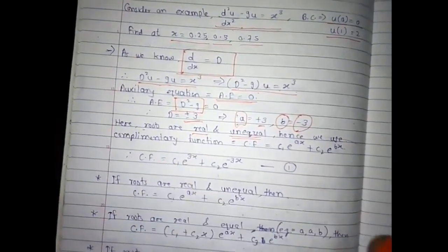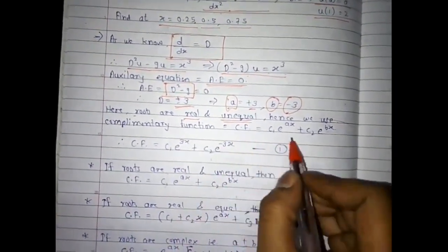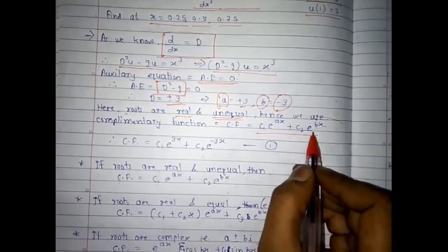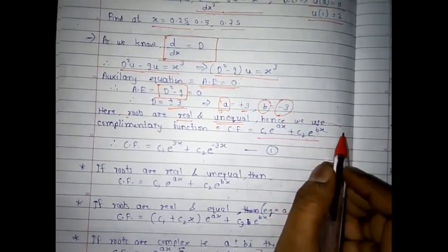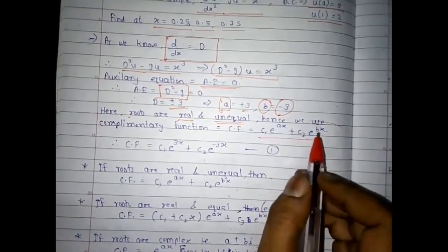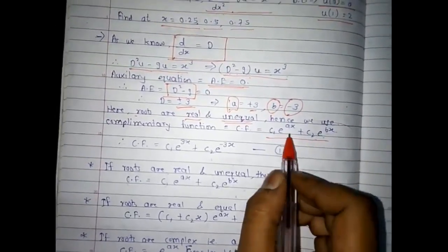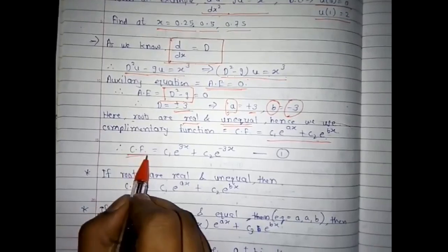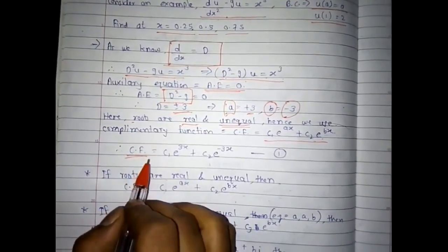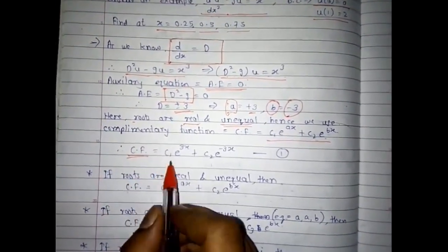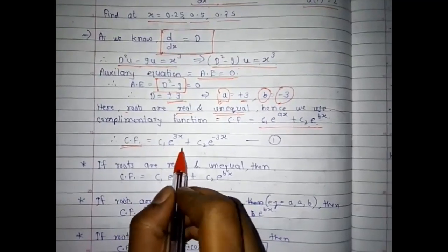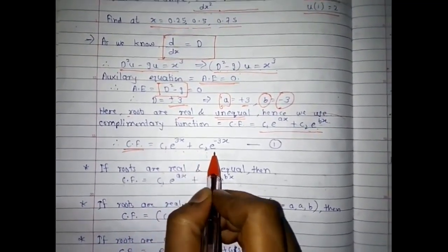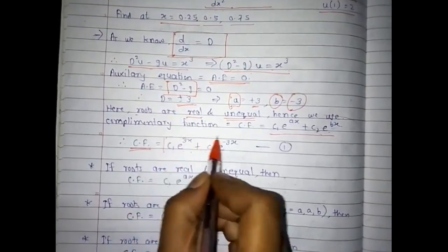Since the roots are real and unequal, we use the complementary function CF = c₁e^(ax) + c₂e^(bx). Substituting a = 3 and b = -3, the complementary function becomes CF = c₁e^(3x) + c₂e^(-3x).